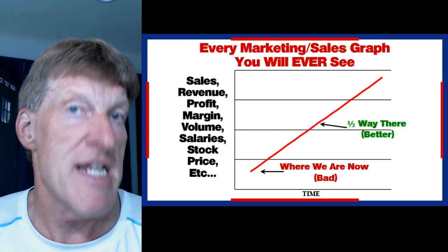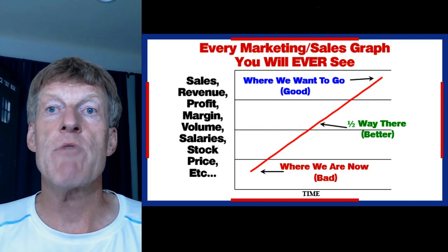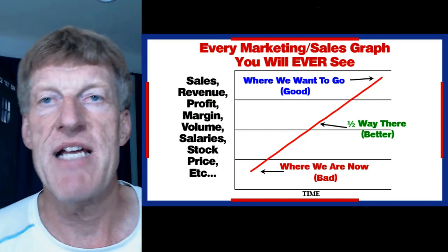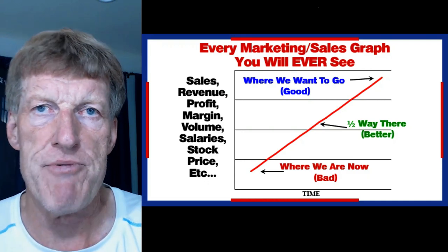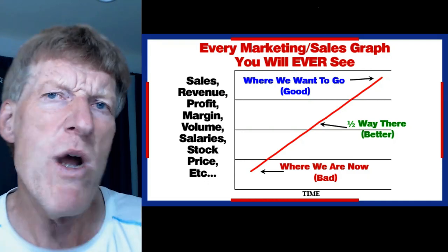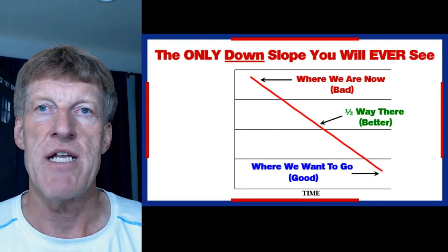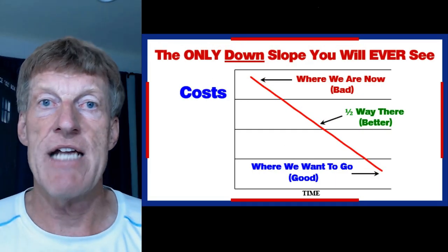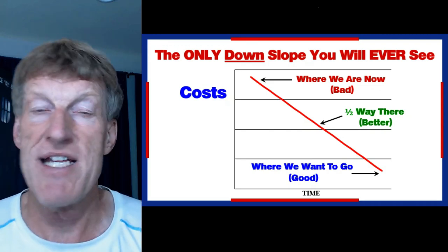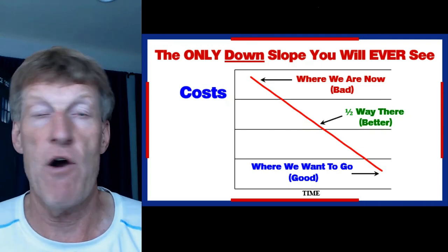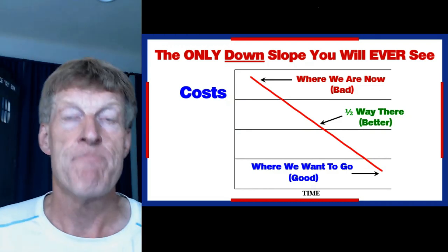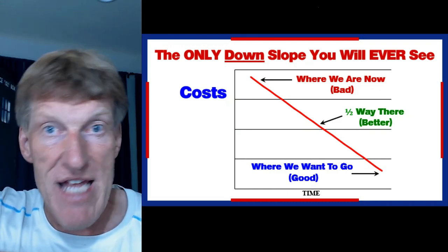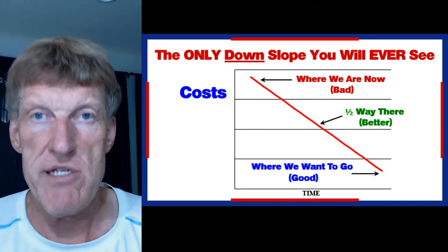When we're halfway there, that's good, but it's better — but we've got to do better. And what we really want is to be way up there. Every sales and marketing slide — the minute you see a sales and marketing person present, that's what you're going to see. There's only one time you'll ever see one go the other direction — from upper left down to the right — and that's when it comes to costs. And that's usually not a sales and marketing person, it's usually your CFO. They're the only ones who have down slopes because they want to see costs go down.